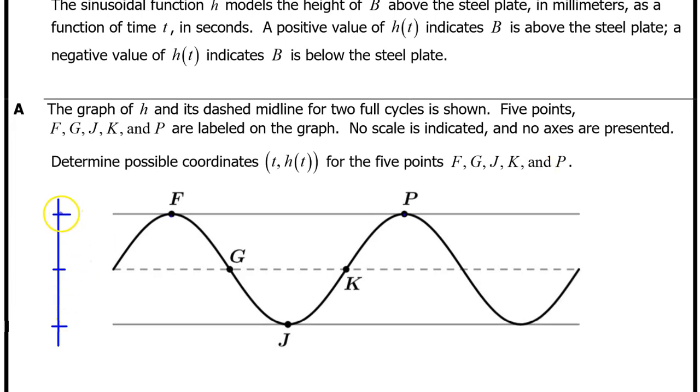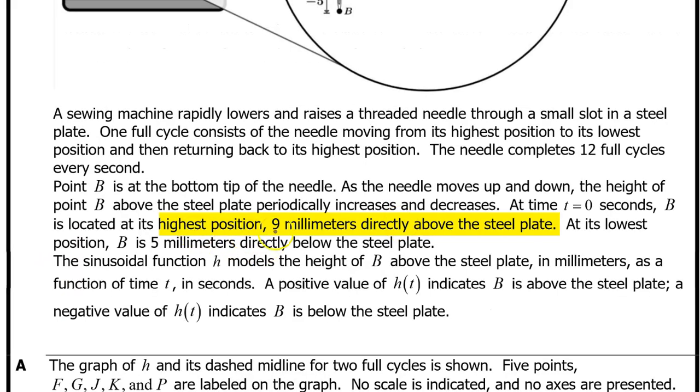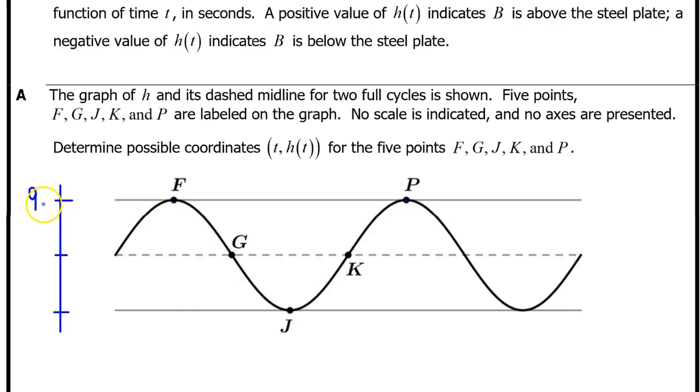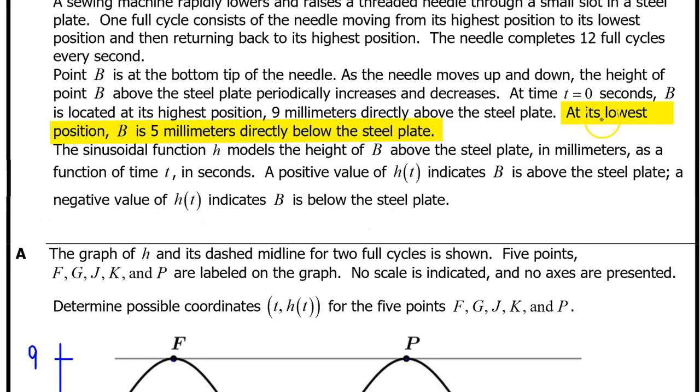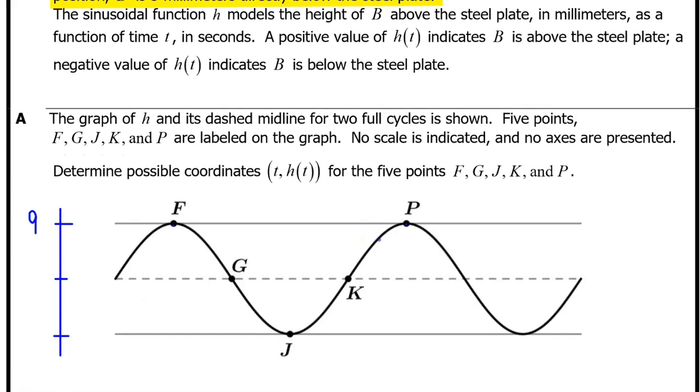First let's try to determine the maximum, minimum, and middle output values. The highest position of point B is 9 mm above the steel plate. h(t) has a maximum value of positive 9. The lowest position of point B is 5 mm directly below the steel plate. That's a minimum value of negative 5. We can find the middle value by taking the average of these two numbers. 9 plus negative 5 divided by 2 is 4 over 2 which is 2. So the middle value is 2. We have now found the output values for all five points.